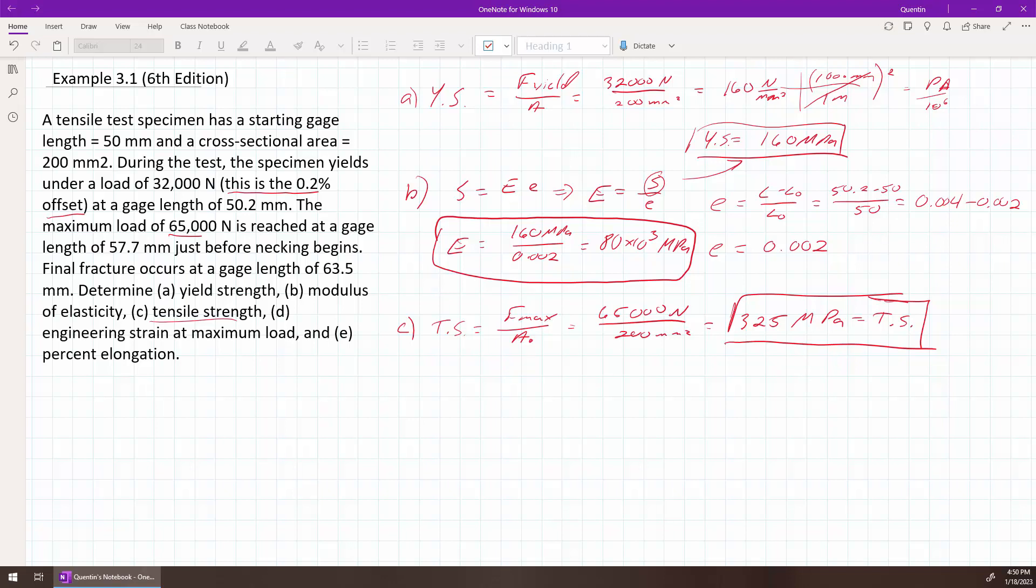And then D, the engineering strain, and that is simply L minus L naught over L naught. But I say engineering strain, it's really the engineering strain at maximum load. And so we know the length at maximum load is that. So it's equal to 57.7 minus 50, all that over 50. So that works out to be 0.154, length over length, so there's no units on that one.